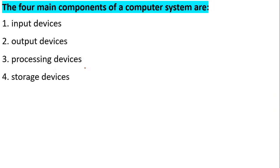Yesterday we studied about what is a computer. We studied all the various types of computer classification on the basis of size — supercomputers, mainframe, microcomputers. Then on the basis of technology, we studied analog and digital. On the basis of generation: first, second, third, fourth and fifth. Remember, first generation uses vacuum tubes, then transistors, then integrated circuits. A computer is an electronic device that takes in input and gives you some results.